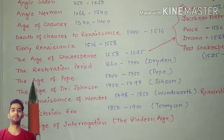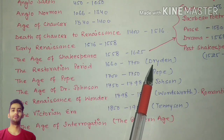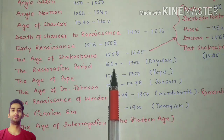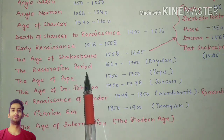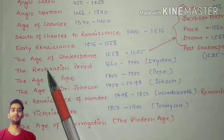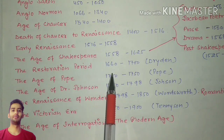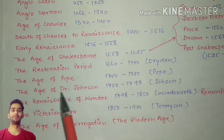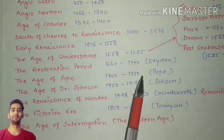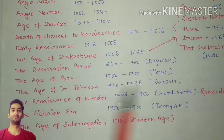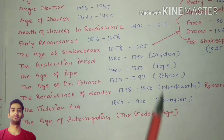The Restoration Period is between 1660 to 1700, also called the Age of Dryden. 1660 is important because this was the year when Charles II ascended to the throne again — that was the restoration of the reign of Charles II, which is why it is called the Restoration Period. The Age of Pope is 1700 to 1750, also called the Age of Pope.